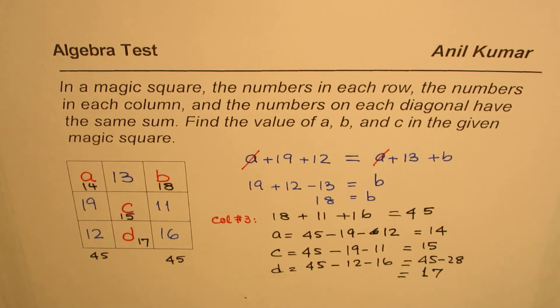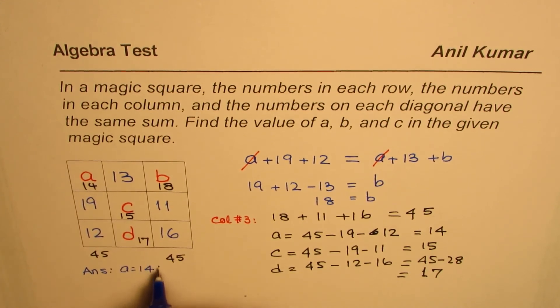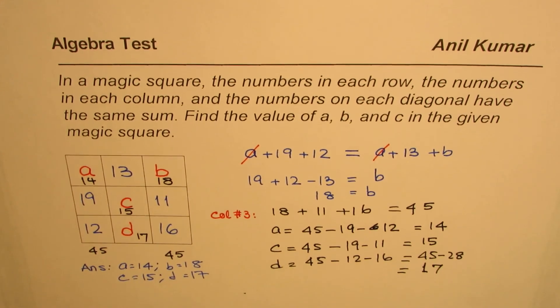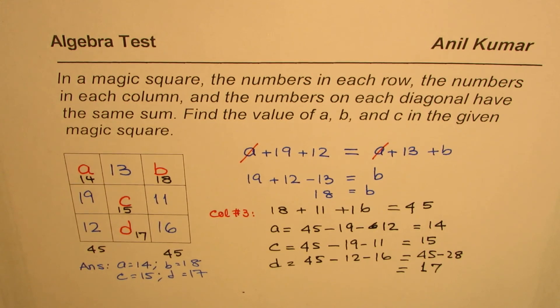Now we can write down our answer. Our answer here is A equals 14, B equals 18, C equals 15, and D equals 17. That is how you can actually solve this magic square. I hope the strategy helps. Thank you and all the best.